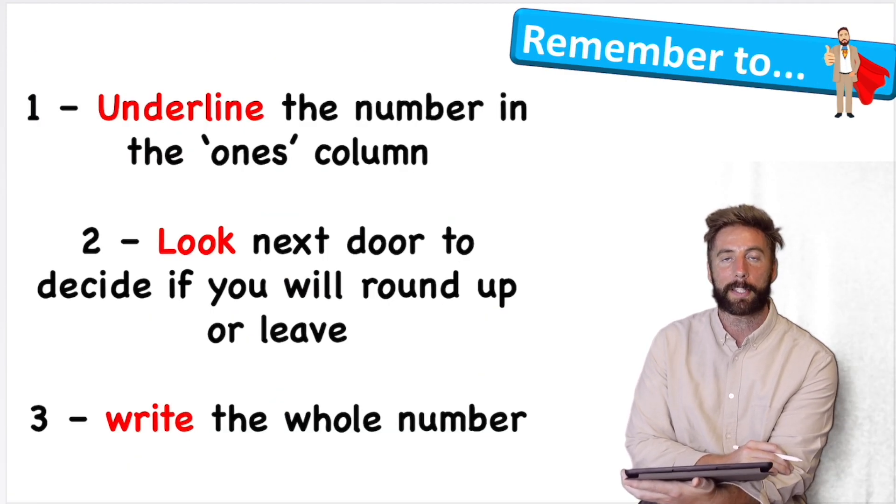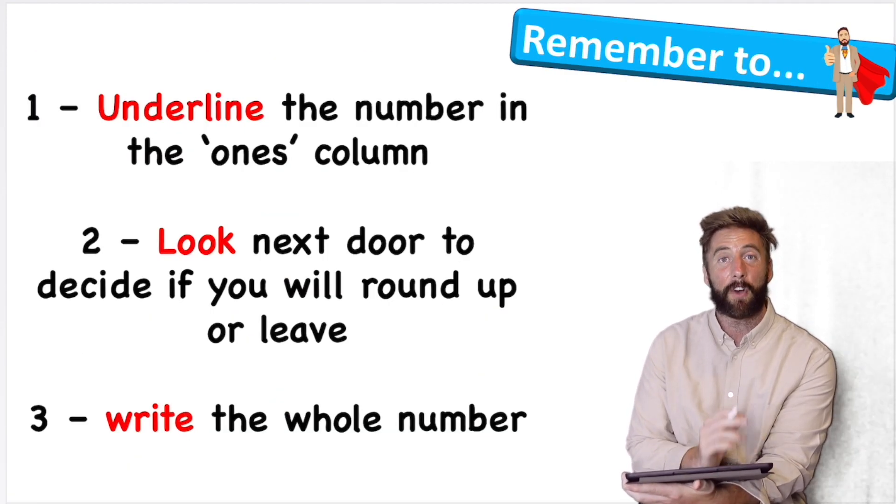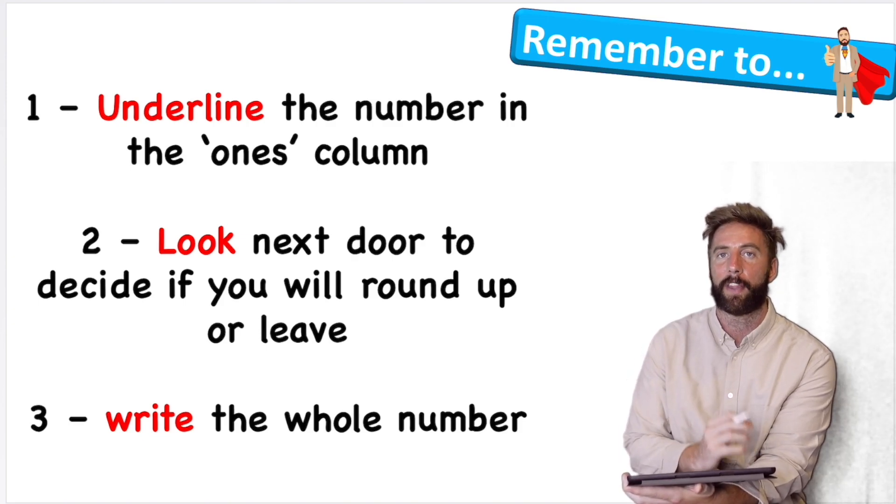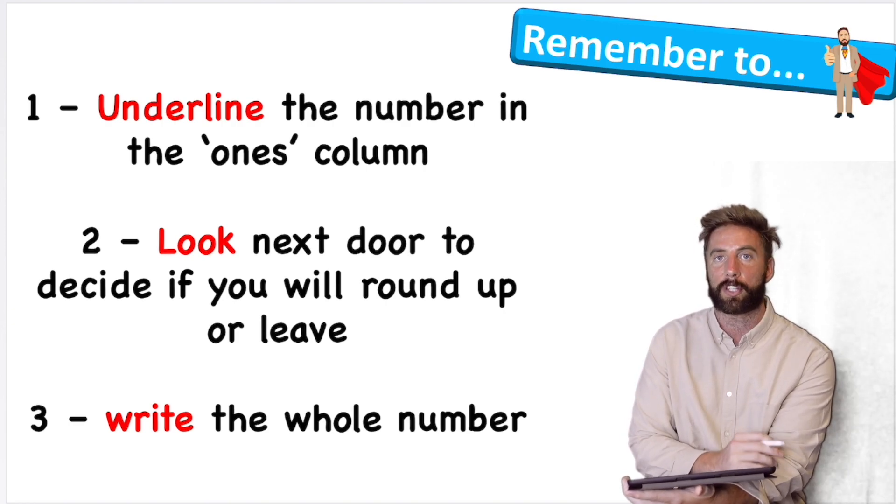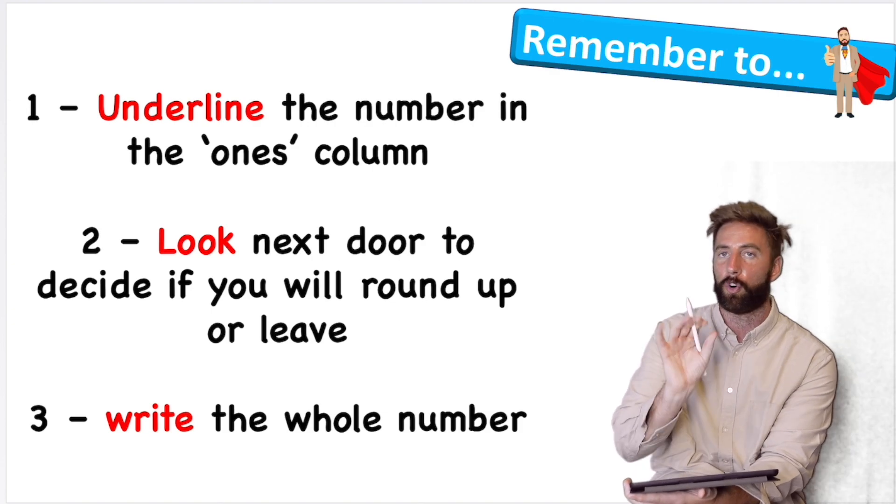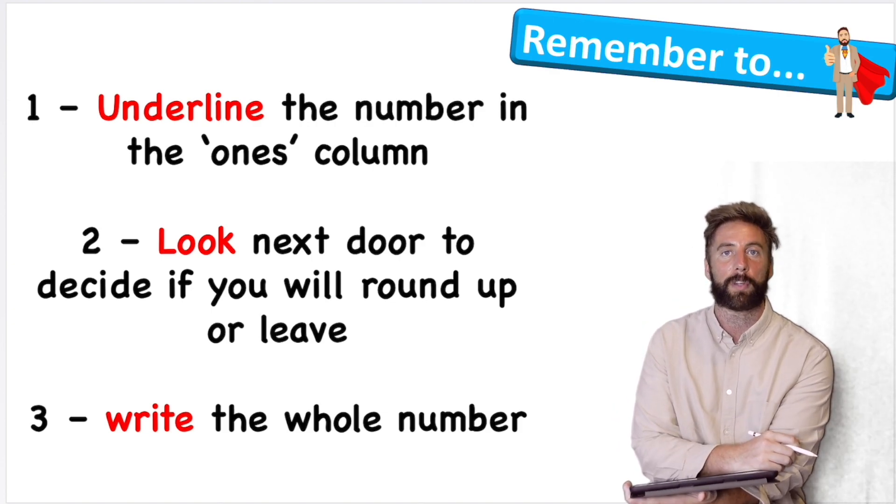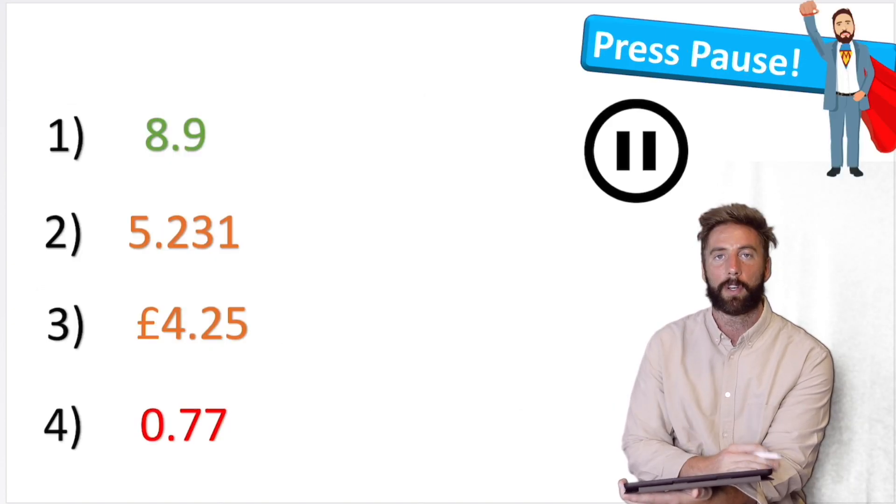And there we go. It's as simple as that. Things to remember. First, underline the number in the ones column. If we're rounding to the nearest whole number, the nearest whole number will be the one in the ones column. Then we're going to look next door to decide if we're going to let it soar or let it rest. And then we just simply write the new whole number. Okay, here we go.